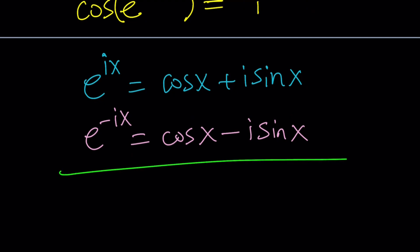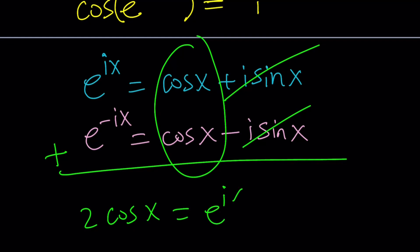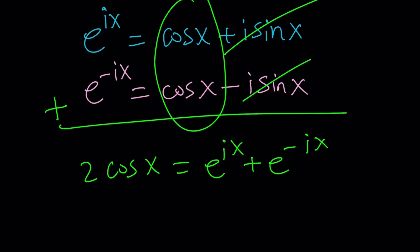Just by adding these two things we get rid of the sine x and we end up with an expression for cosine of x. Let's go ahead and add side by side putting this on the left hand side. So two cosine x equals e to the ix plus e to the negative ix. You could also use hyperbolic functions but I don't like them.